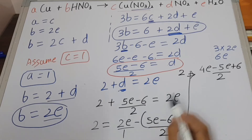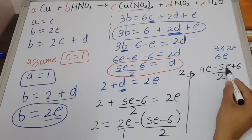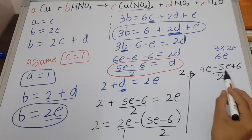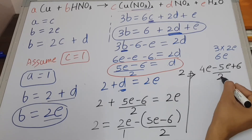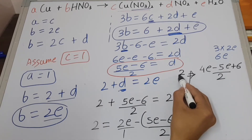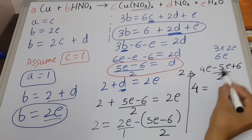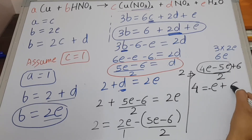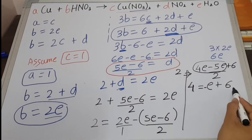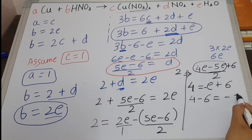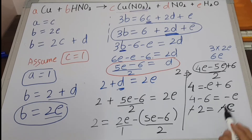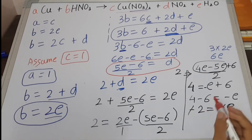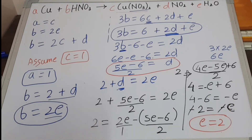Solving further: 4E minus 5E gives minus E, and taking 2 to the other side gives 2 times 2 equals 4. So minus E plus 6 equals 4, which means minus E equals 4 minus 6, so minus E equals minus 2. Finally, E equals 2. So we have found the value of E, which is 2.